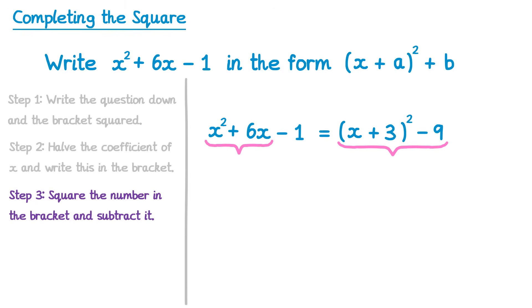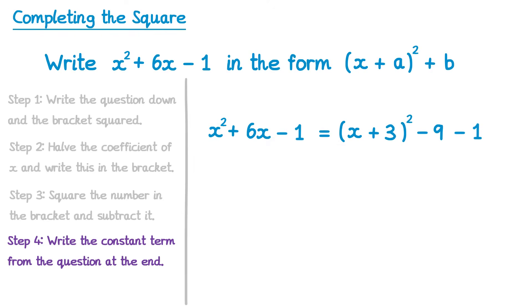What we found out now is that this part here, x squared plus 6x, is the same as this part here. x plus 3, all squared, take away 9. But don't forget there's this term here. So the fourth step is to write the constant term from the question at the end. So we'll write that negative 1 at the end. Now these are equivalent.